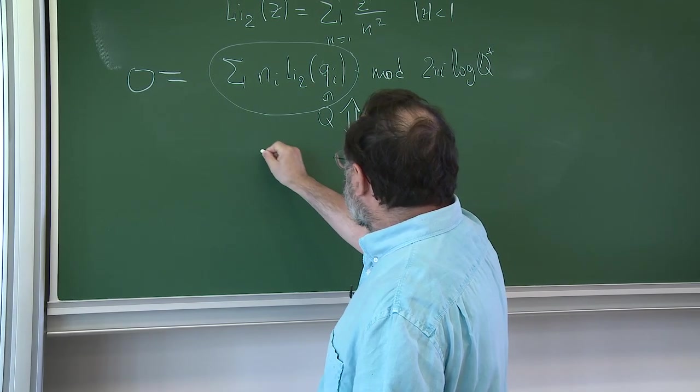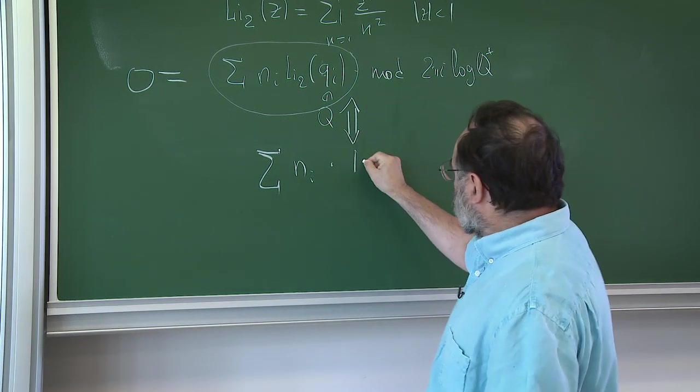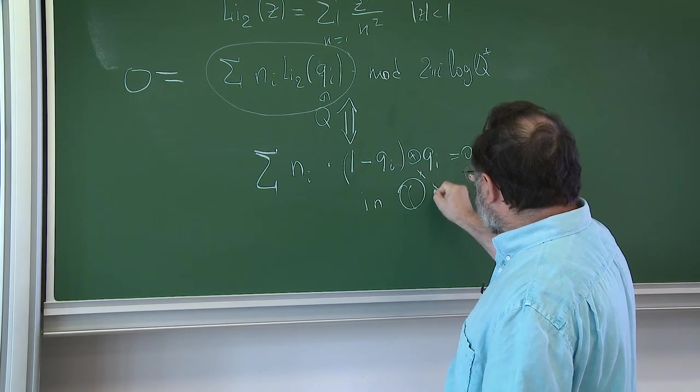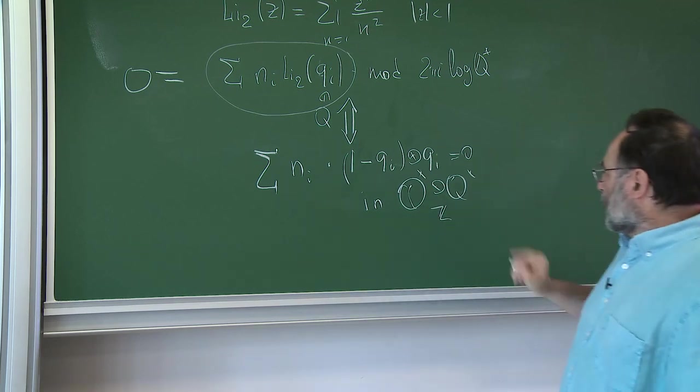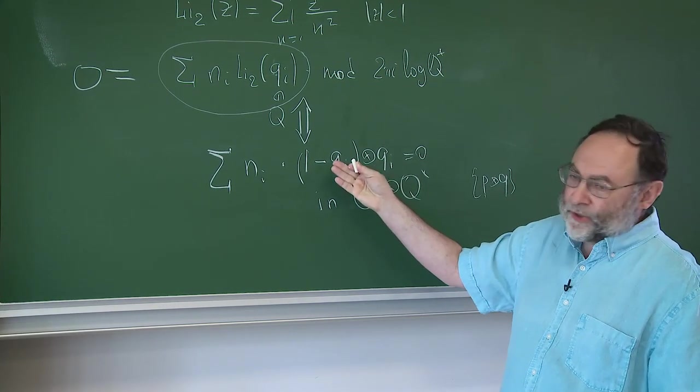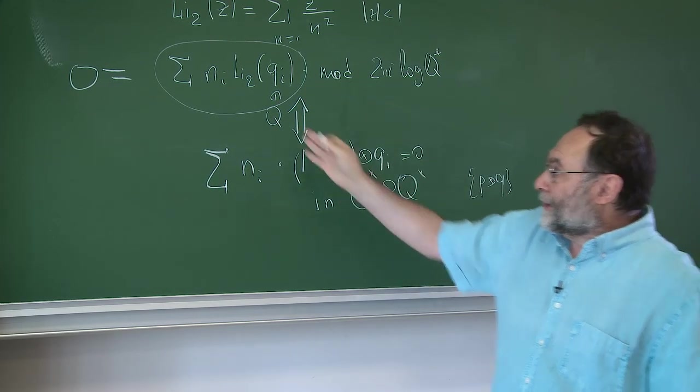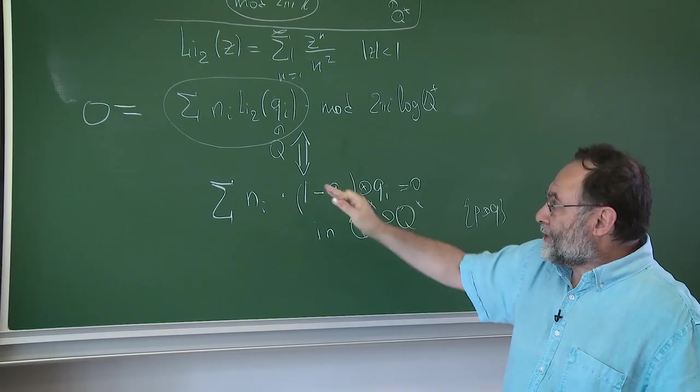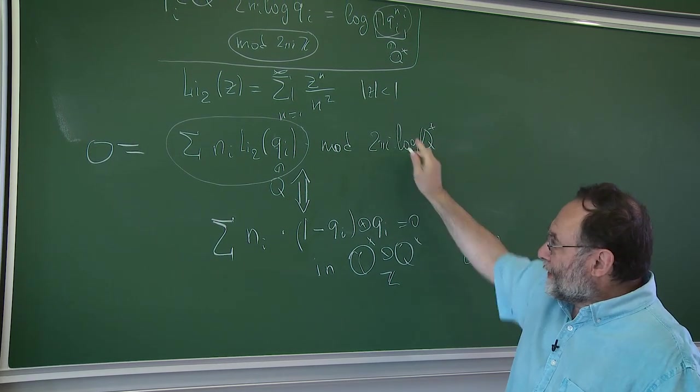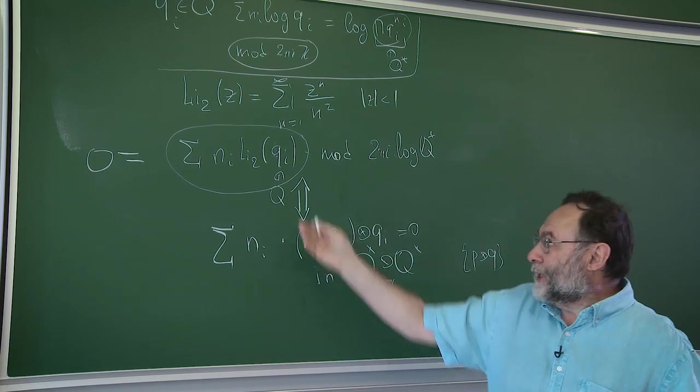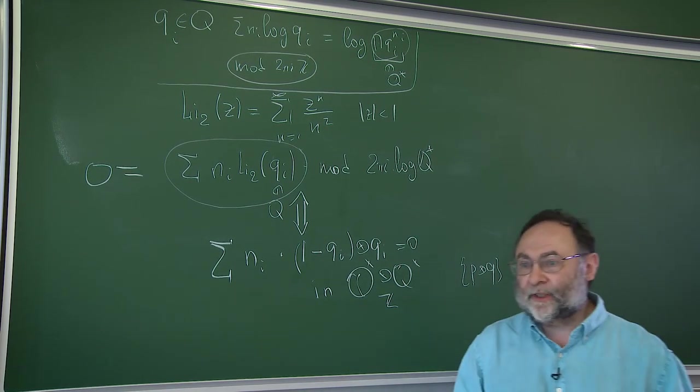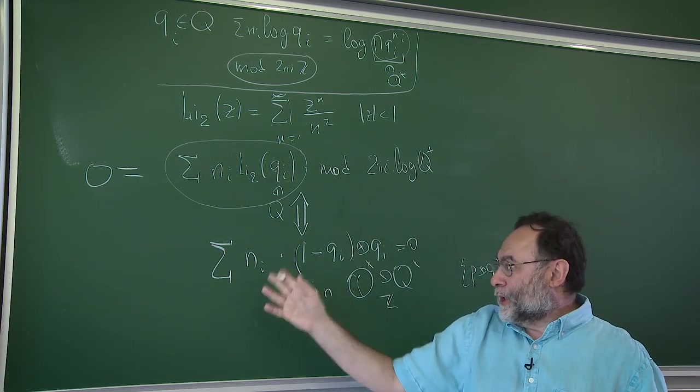And so the claim is that this is zero modulo 2πi log q, if and only if the following algebraic statement holds. If you consider the sum of this ni, it's an integer times 1 minus qi tensor qi, and this is zero in the abelian group q star tensor q star over Z. And so this is a free group with the basis p tensor q up to little two torsion. So it's very easy to handle this question. This is just you can handle this for any collection of numbers immediately. But this question looks difficult and transcendental and this theory of mixed motives, arithmetic theory of mixed motives, imply that actually the equation when it's zero modulo this little freedom is equivalent to this algebraic statement. So that's what I mean by making statements about integrals using arithmetic algebraic geometry. And I call this arithmetic analysis because you make statements of analytic nature, but you use arithmetic basically.